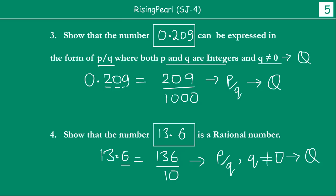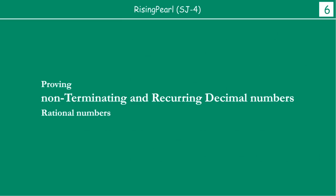So these were the examples of decimal numbers which were terminating, right? Now let's talk about proving: how do we prove non-terminating and recurring decimal numbers as rational numbers? How do we prove that? So again, we will take some examples.